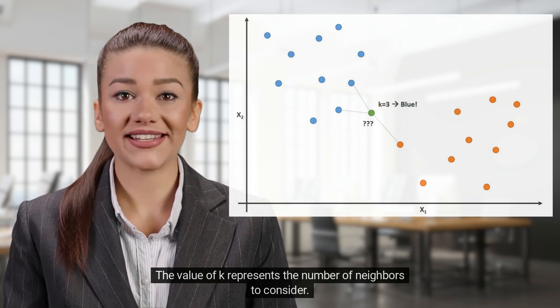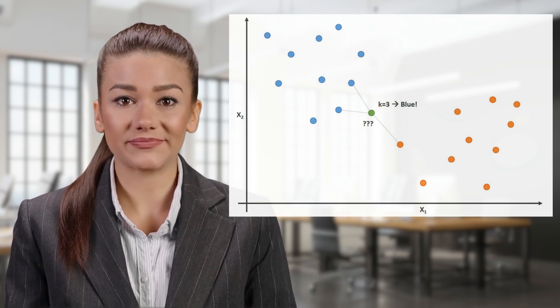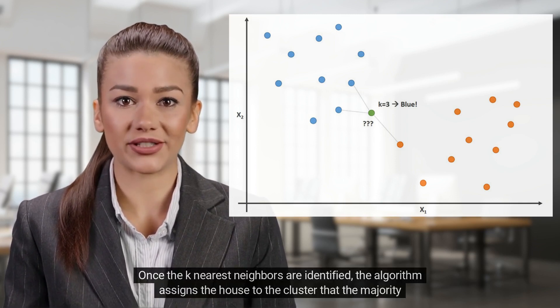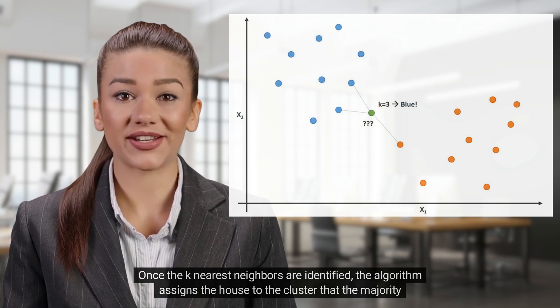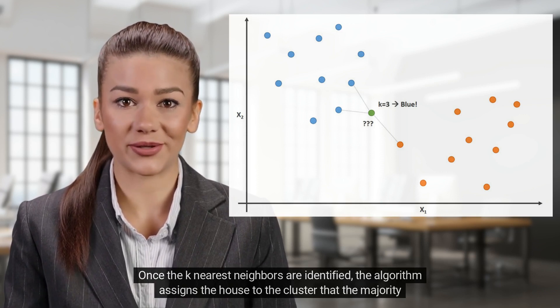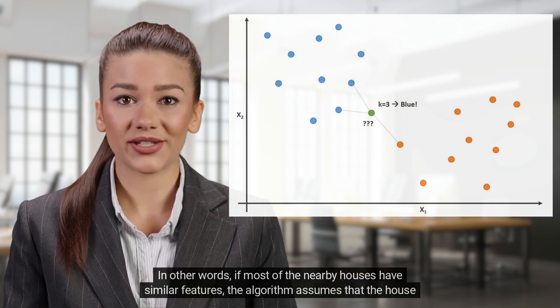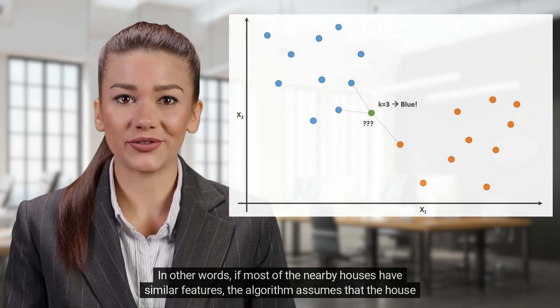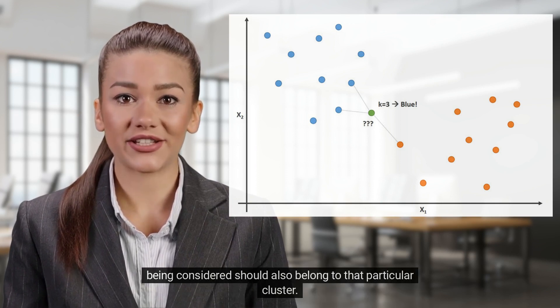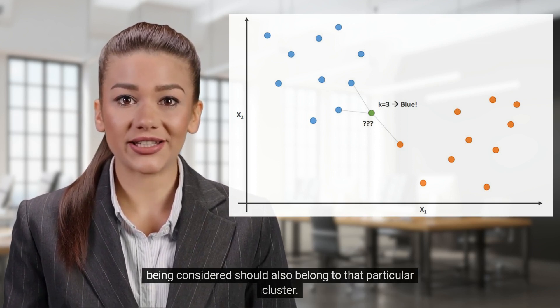The value of K represents the number of neighbors to consider. Once the K-nearest neighbors are identified, the algorithm assigns the house to the cluster that the majority of its neighbors belong to. In other words, if most of the nearby houses have similar features, the algorithm assumes that the house being considered should also belong to that particular cluster.